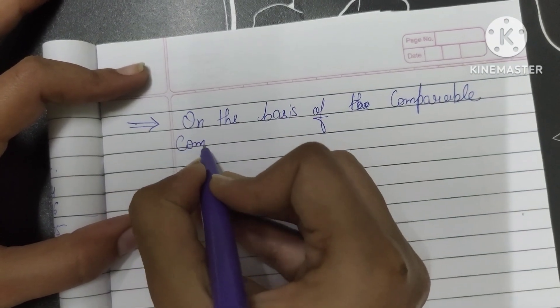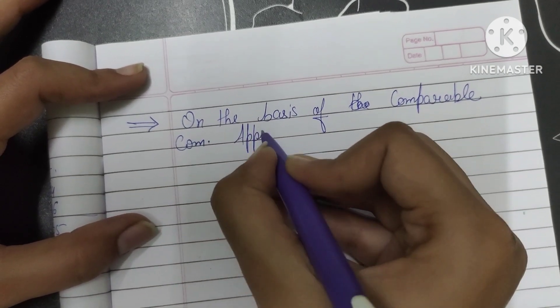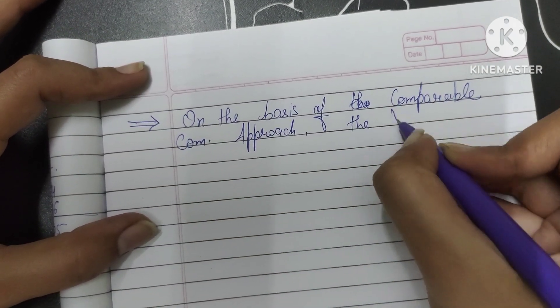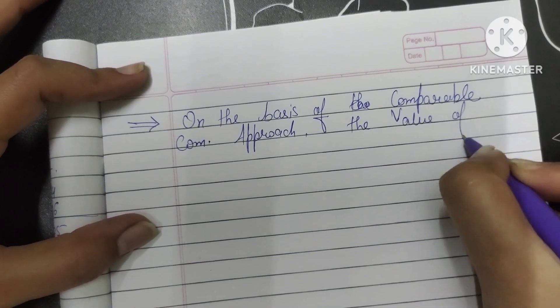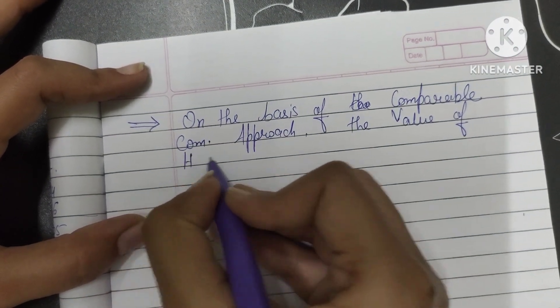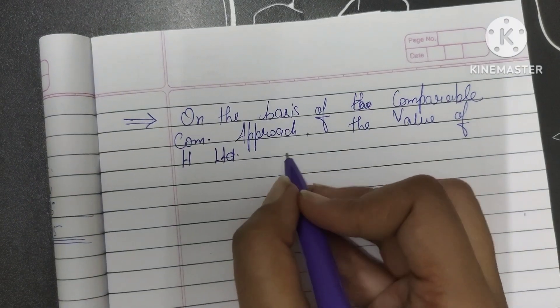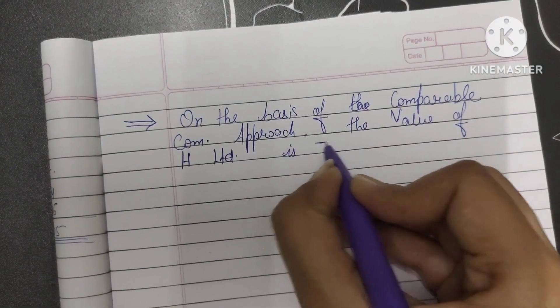the value of business, the value of H Limited, you write the company name, H Limited, is rupees 333.33 crore.